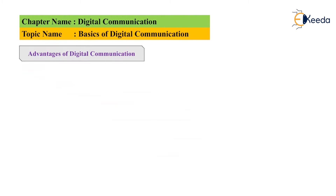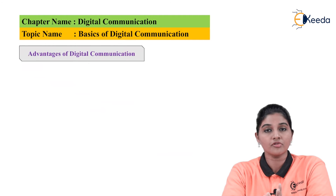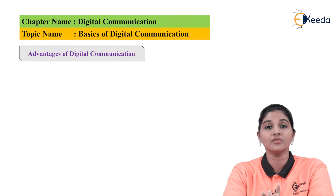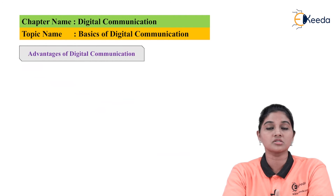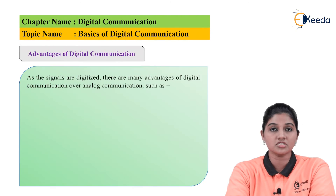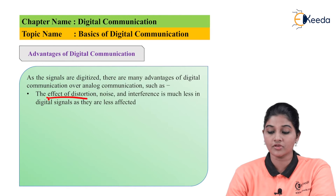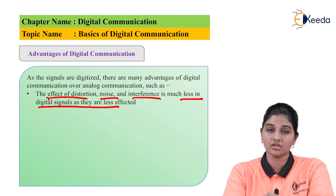Now let's move on to the advantages of digital communication. There are many disadvantages related to analog communication — the effect of noise, interference, and the main concern of security. To overcome these, the digital system comes into the picture and provides many advantages, making it the most widely used communication system in the world. The first advantage is that the effect of distortion, noise, and interference is less in digital systems, so signals are affected less.